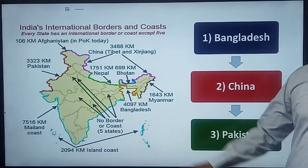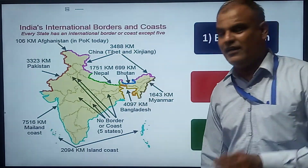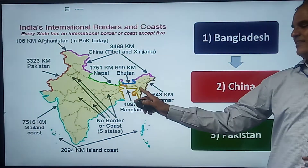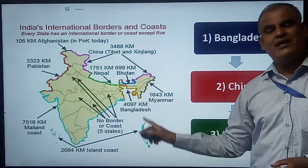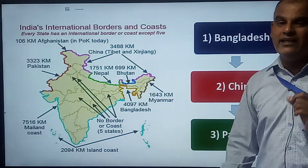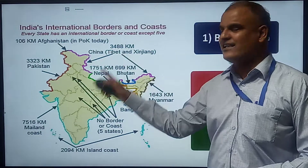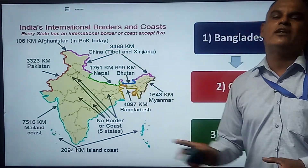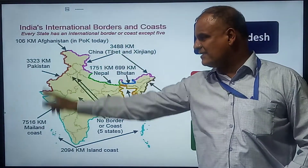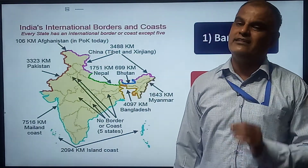This map shows India's borders with neighboring countries. The border with Bangladesh is the longest at 4,997 km. The border with China is 3,488 km, and the border with Pakistan is 3,323 km.